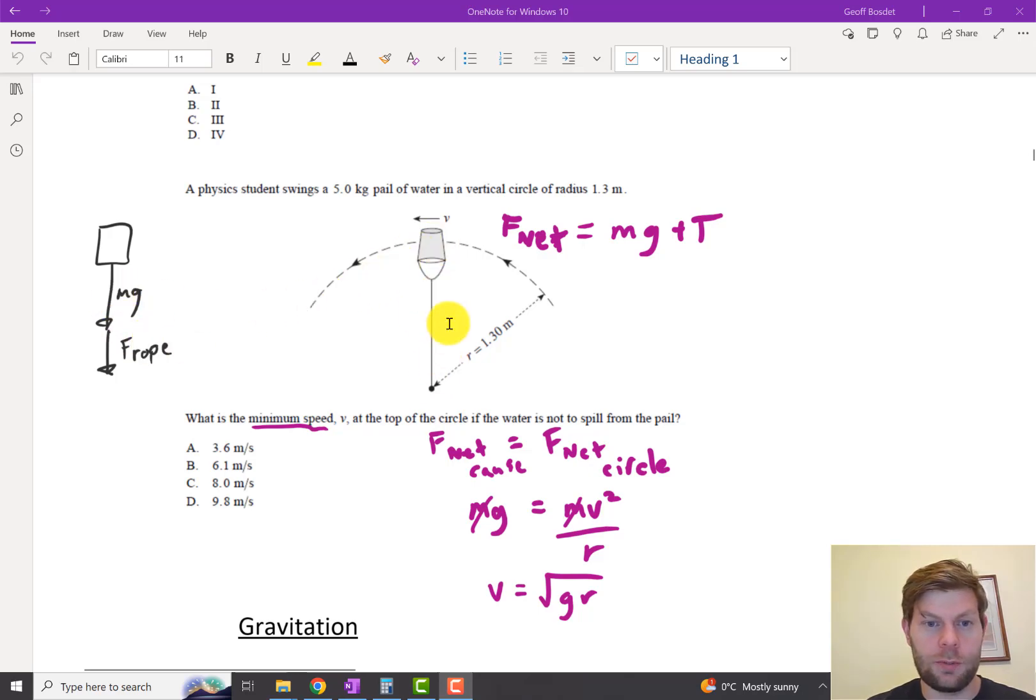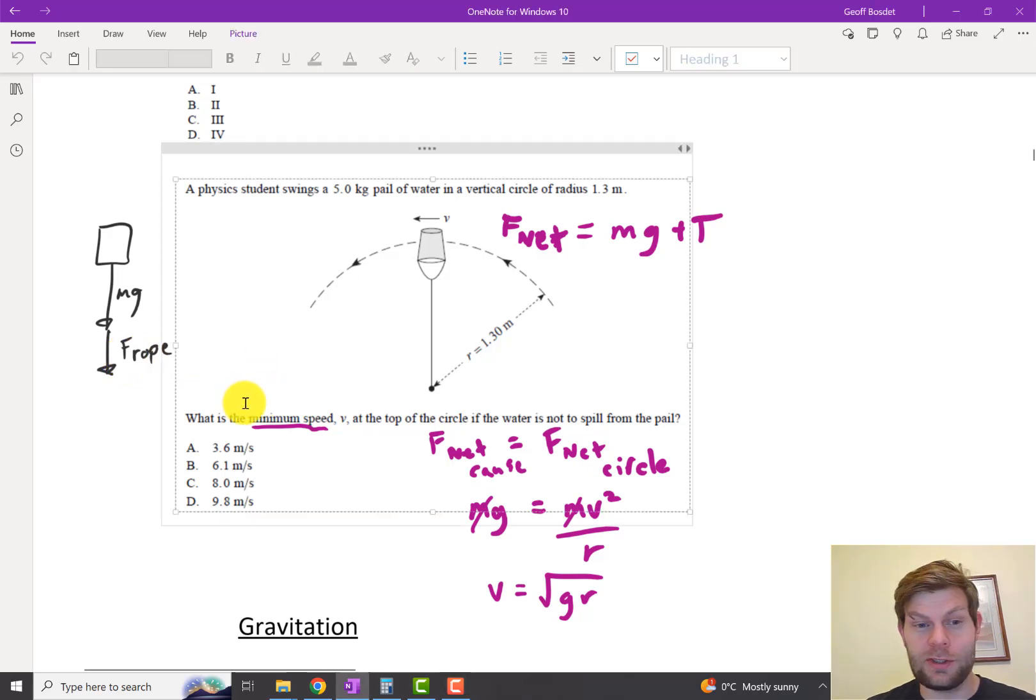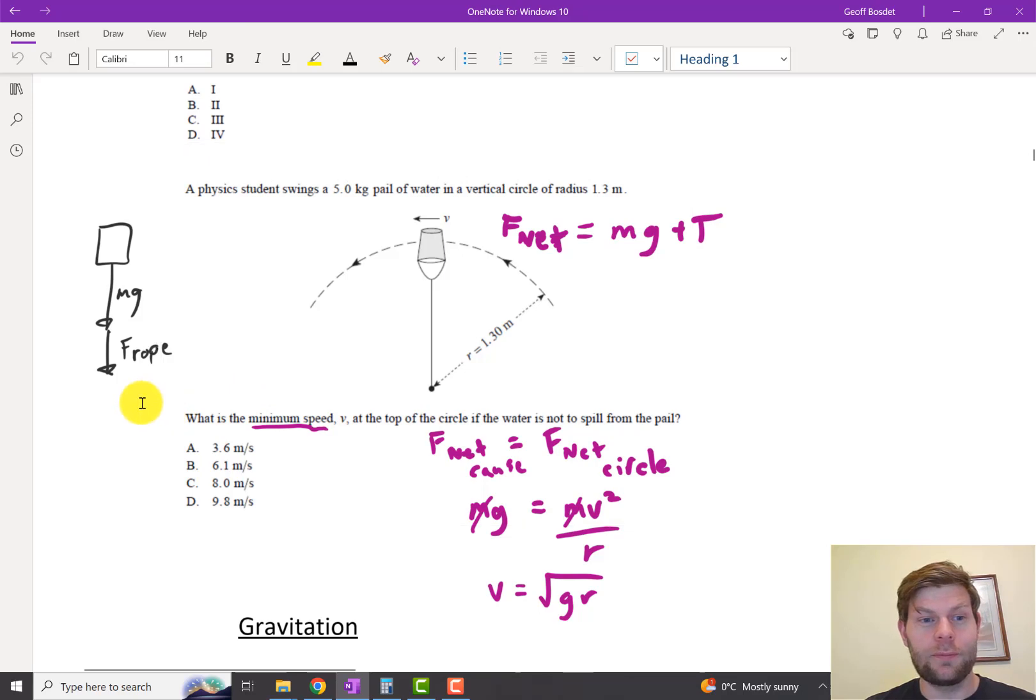Now you could swing it slower and slower, and as you do, gravity is going to stay the same, but the amount you're pulling with the rope will get less and less. Until at the very minimum speed you can spin this around without water falling on you, the rope is completely slack at the top - it's just gravity pulling the bucket and water down.